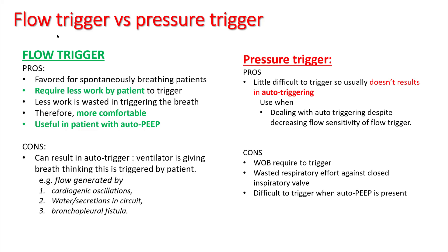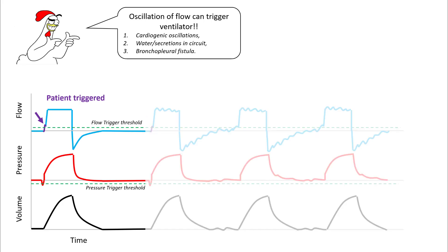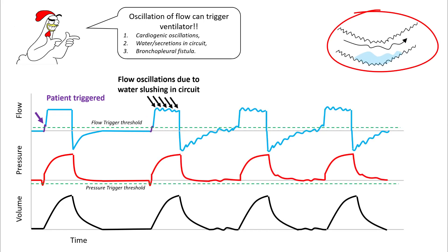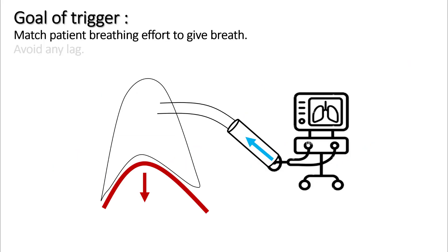Oscillation of flow can also trigger the ventilator. For example, if you have water slushing in the circuit, that creates turbulence and an irregular flow in the circuit, and if this is high enough, it can trigger a breath. The goal of the trigger is to match the patient's breathing effort — every time the patient wants to breathe, the machine has to initiate a breath.